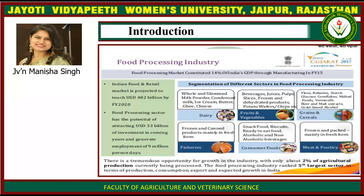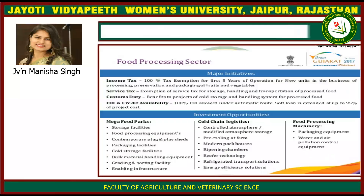The meat and poultry industry produces frozen and packed products, mainly in fresh form, as fresh meat is generally preferred. Major initiatives in the food processing sector include: 100% income tax exemption for the first 5 years for new units involved in processing, preservation and packaging of fruits and vegetables; service tax exemption for storage, handling and transportation of processed food; customs duty benefits for cold storage and handling systems for processed food; 100% FDI allowed under automatic route; and soft loans of up to 95% of project cost. Investment opportunities for mega food parks include storage facilities, food processing equipment, plug-and-play sheds, packaging facilities, cold storage, bulk material handling and enabling infrastructure.